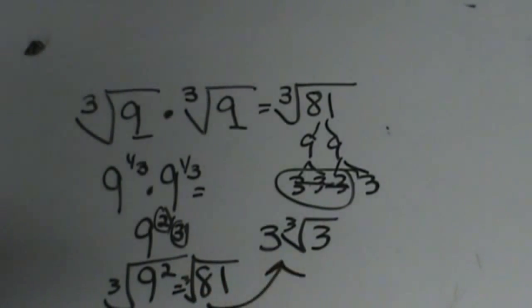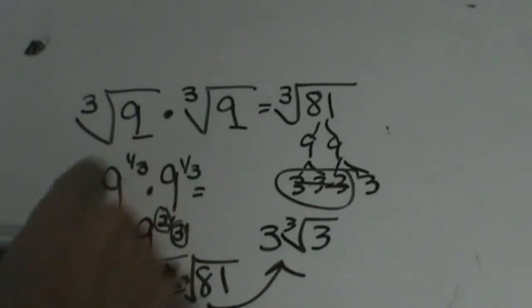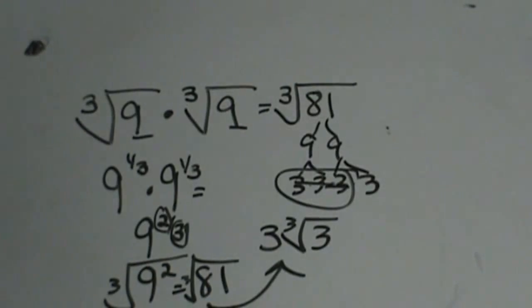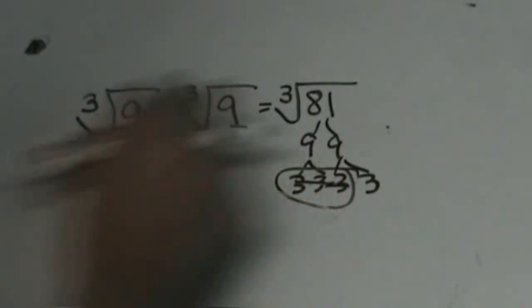Well, the cube root of 81 is 3 cube root 3. So just the exponential or the rational way to look at it, or the square root way to look at it. I want you to be able to see both.